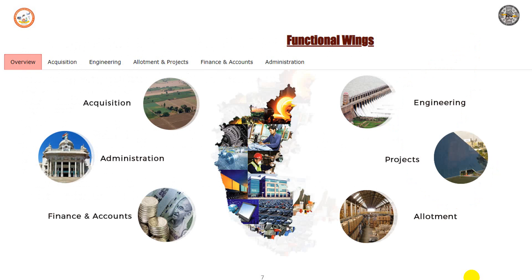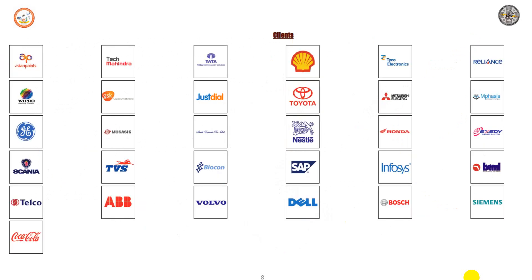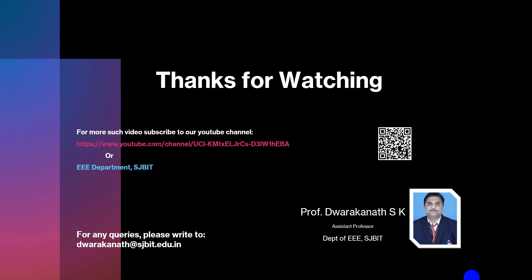The functional wings include the acquisition team, administrative finance and accounts team, engineering team, project team, and client alignment team. Major clients include Asian Paints, Wipro, GE, Telco, Coca-Cola, ABB, TCS, Tech Mahindra, GlaxoSmithKline, Just Dial, Biocon, Volvo, Toyota, Shell, SAP, Dell, Taiko Electronics, Mitsubishi, Honda, Infosys, Bosch, Siemens, and many others.